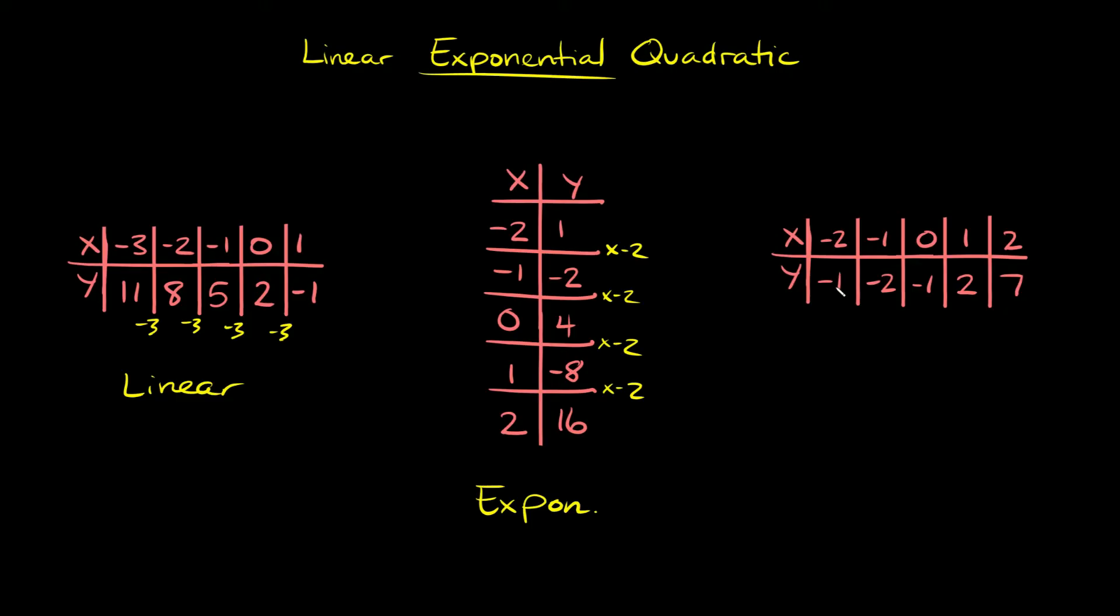To get from negative 1 to negative 2, you subtract 1, and then to get from negative 2 to negative 1, you add 1. Then negative 1 to positive 2, you add 3, and then from 2 to 7, you add 5.